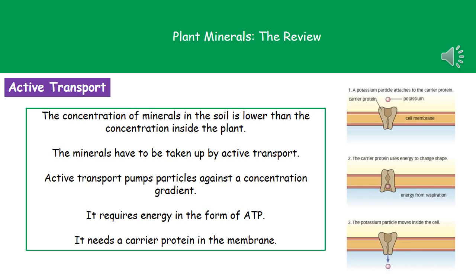Minerals actually get into our plant through a slightly different process to ones we've looked at before. They enter the plant through a process called active transport. The reason they have to use this different process is that the concentration of minerals in the soil is lower than the concentration inside the plant, so they'd be going against their concentration gradient, which means we can't use diffusion.